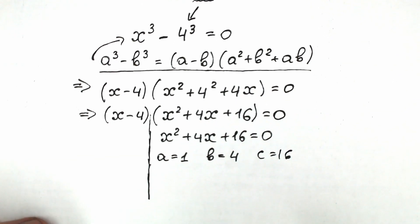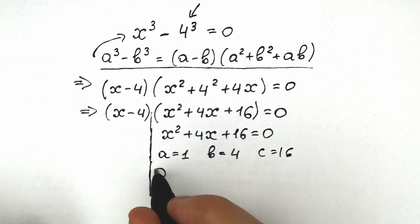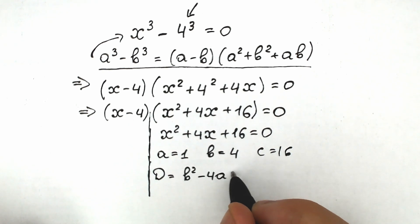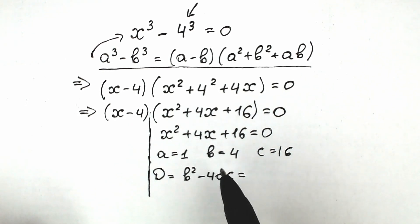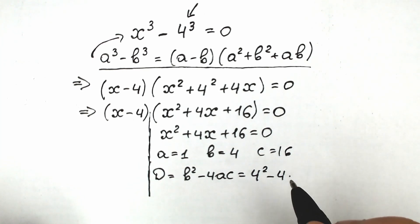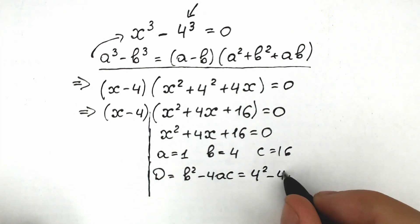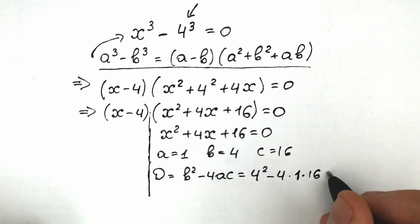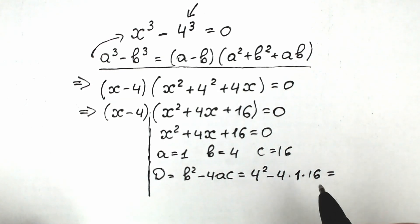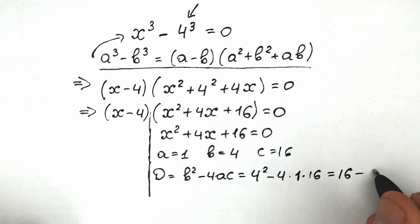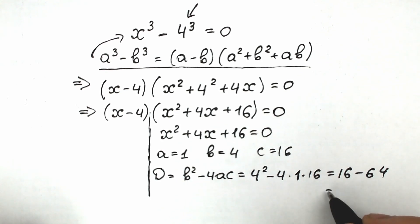Now let's find the discriminant. The discriminant equals b squared minus 4ac. Plugging in: 4 squared minus 4 times 1 times 16, which gives 16 minus 64, equal to negative 48. So we have a negative discriminant.